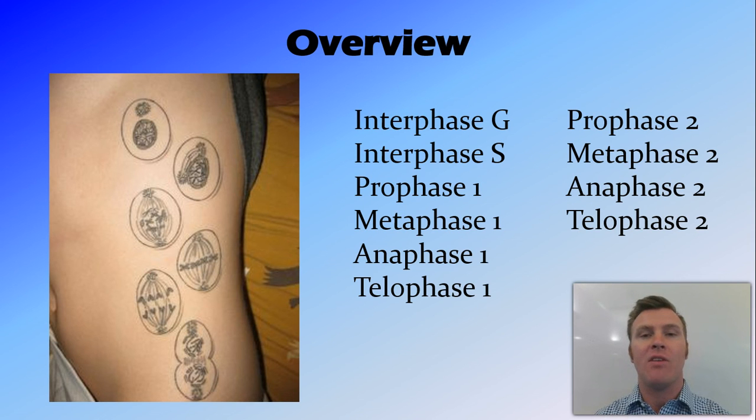Anaphase where the spindle fibres pull those chromosomes to the poles, splitting apart. Telophase, where the cell nuclear membrane reforms and cytokinesis occurs. We then go into meiosis 2, where all those things happen again. Starting with that 2n number, ending up with 1n at the end of that second cytokinesis after telophase 2.